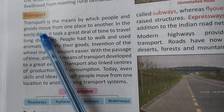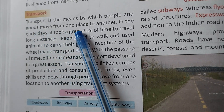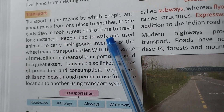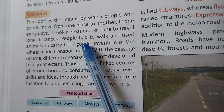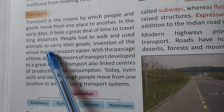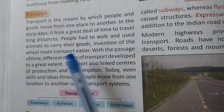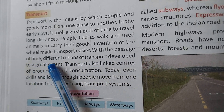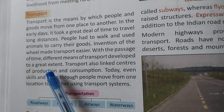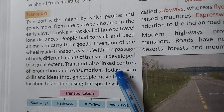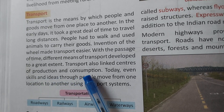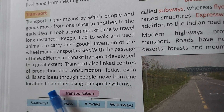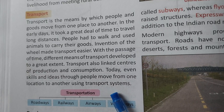Transport is the means by which people and goods move from one place to another. In the early days, it took a great deal of time to travel long distances. People had to walk and used animals to carry their goods. The invention of the wheel made transport easier. With the passage of time, different means of transport developed to a great extent. Transport also linked centers of production and consumption. Today, even skills and ideas move from one location to another using transport systems.